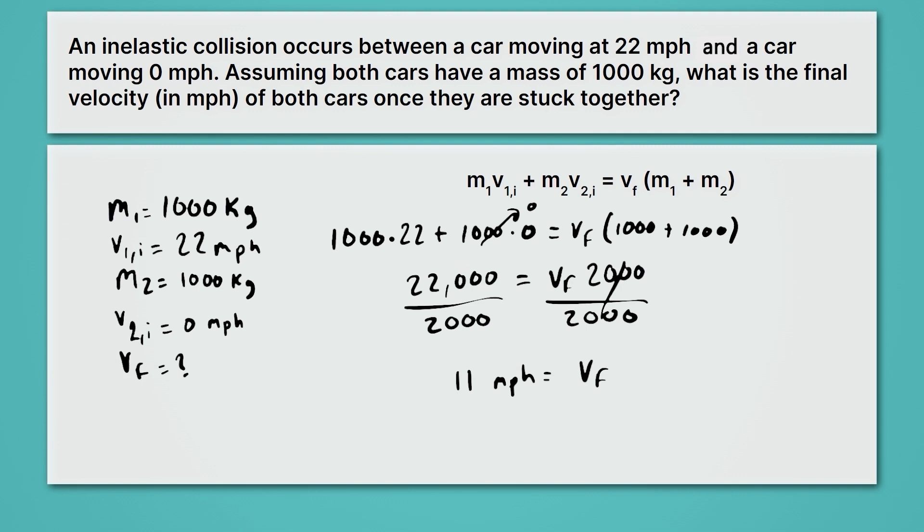That'll cancel out there, and we'll get 11 miles per hour equals velocity final. Now we haven't rounded it for significant figures. And in this case, we have just one sig fig for our mass. So we're going to keep our one and that second one will drop to a zero. And we'll get 10 miles per hour as our final answer there rounded for sig figs. So these two cars collide, one's moving 22 miles per hour, one zero miles per hour, and then they stick together and slide forward at 10 miles per hour.